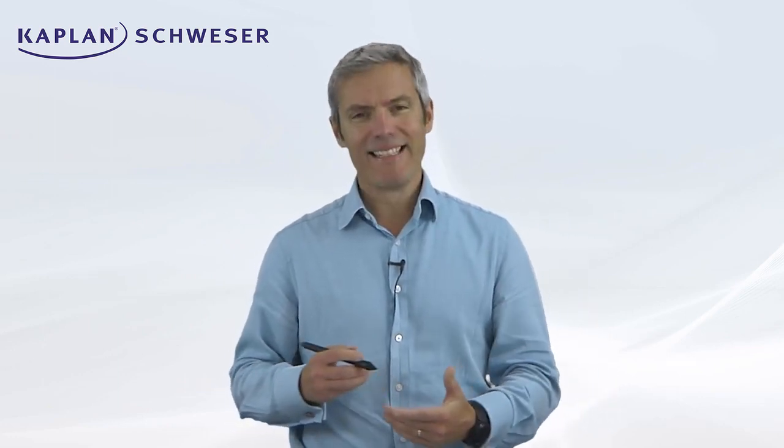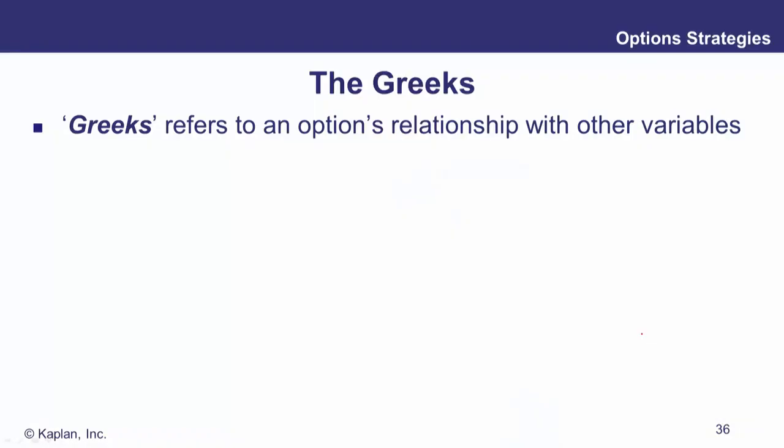The Greeks are something we've met before in previous levels. The Greeks are all about sensitivities — the sensitivity of an option, usually its value, but it could be some other feature of an option. It's the sensitivity of an option with respect to some key input to the pricing of the option.